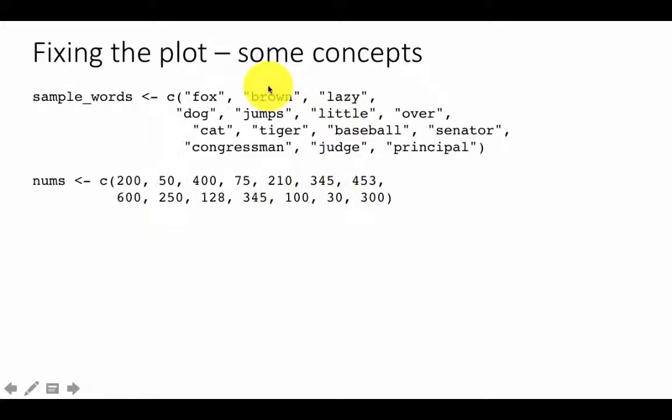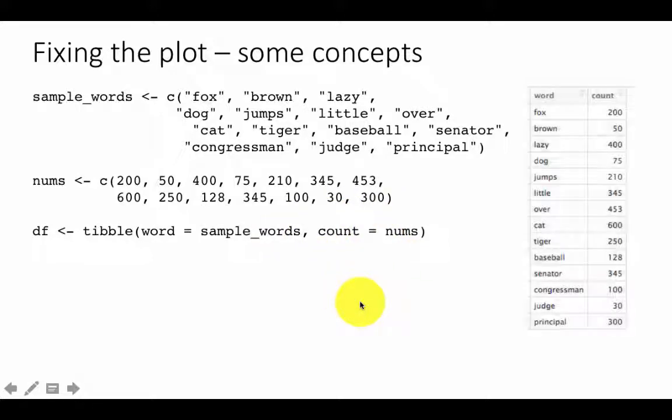But if I don't do anything, and I'm going to create a new table with the word as one column and the count as another column, so word equals sample_words and count equals nums. Of course, ideally, we would want them to be ordered by count, but let's just see what happens if we plot without ordering by count. This is just the data frame as it now looks. Fox, 200, Brown, 50, Fox, 200, Brown, 50, Lazy, 400. So this is just a regular dump of this particular data frame.